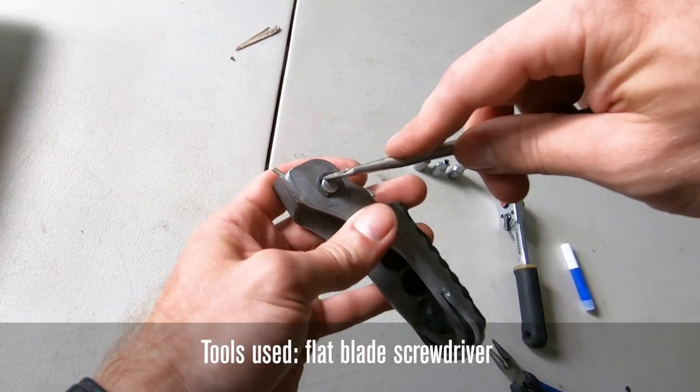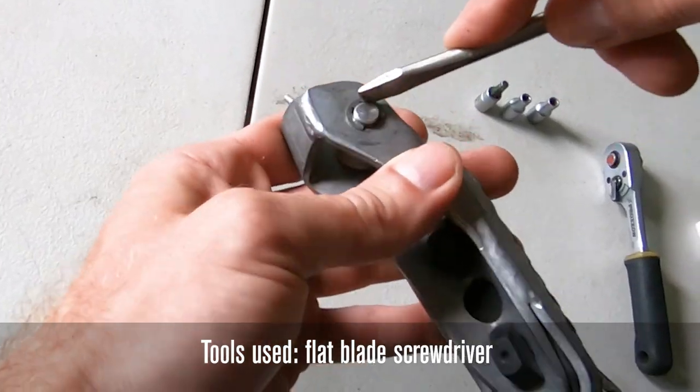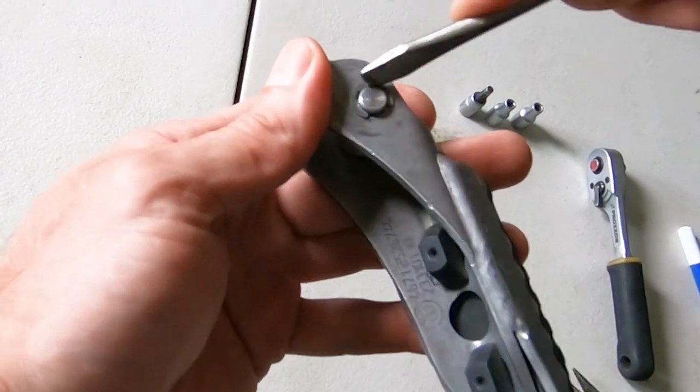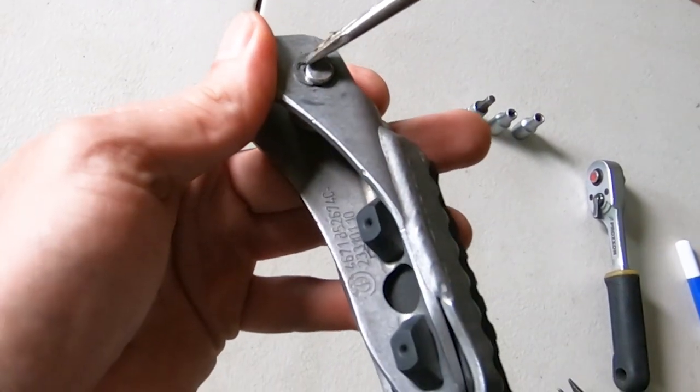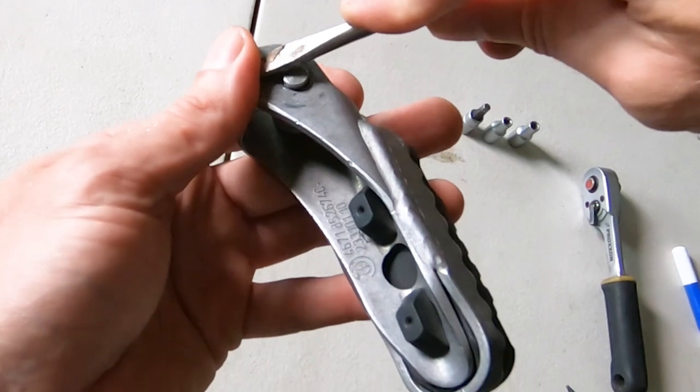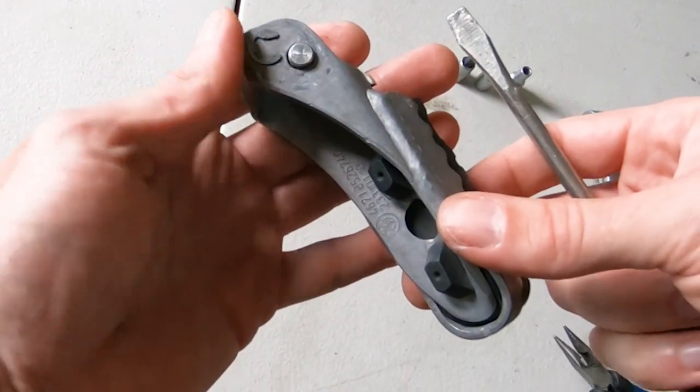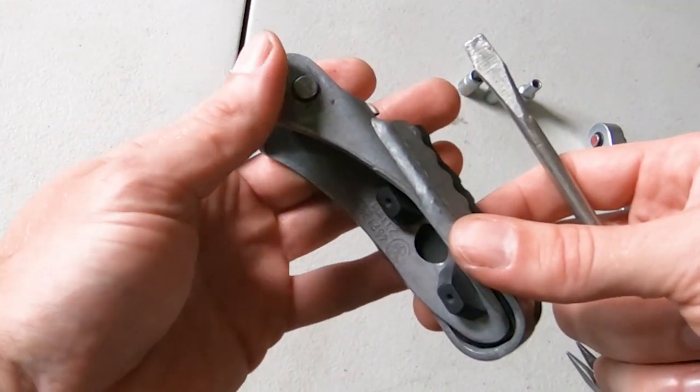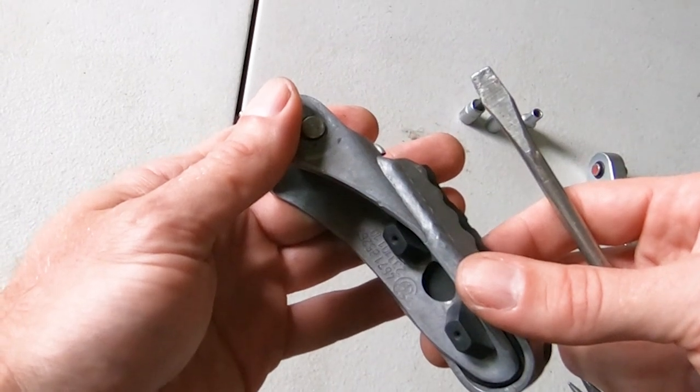Put the point of the screwdriver in this space here and give it a twist against the foot peg pin and you'll see it come off. You just want to do it thoughtfully so you don't lose your e-clip, because you will be reusing that e-clip. This way you avoid bending the e-clip.